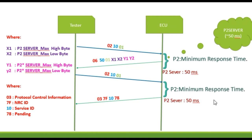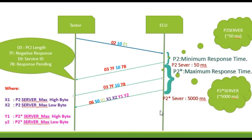So now what will happen? The ECU will try to process until the P2 star time, which would be 5000 milliseconds. Now we will see P2 star server — normally P2 server is 50 milliseconds configured in ARXML files. When the tester sends a request, the ECU tries to process it within P2 server time (50ms), but if it couldn't, the tester gets NRC 78 and the timer is extended to P2 star, which is 5000 milliseconds.